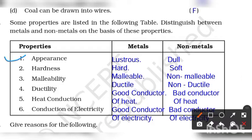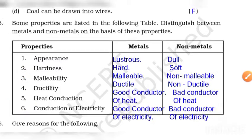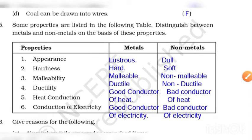Let's see. Next is hardness - metals are hard but non-metals are soft. Malleability - metals are malleable but non-metals are non-malleable. Next is ductility - metals are ductile while non-metals are non-ductile. Heat conduction - metals are good conductors of heat while non-metals are bad conductors of heat. Conduction of electricity - metals are good conductors of electricity and non-metals are bad conductors of electricity. You can take this screenshot or note down in a copy.